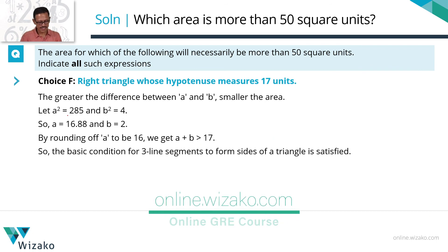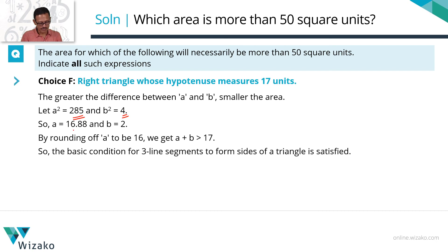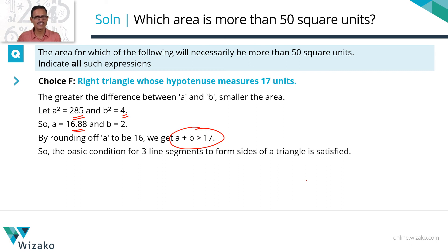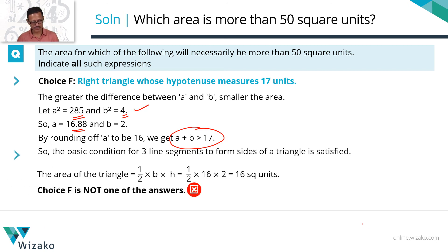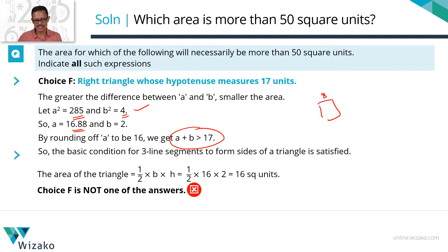To confirm: A = 16.88 exactly, B = 2. A + B = 18.88 > 17, so it forms valid triangle sides. A² + B² = 285 + 4 = 289 = 17², confirming the right triangle. The area is (1/2) × 16.88 × 2 = 16.88 square units, definitely less than 50. So F is also not the answer. Among all six choices, only the square whose side is 8 units necessarily gives an area greater than 50. Choice E is the answer.